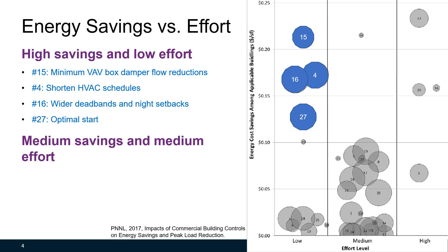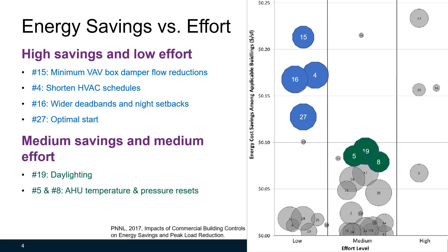The second group of measures are medium savings and medium effort. This includes daylight savings, though in this course we're not going to focus on lighting. Also in this group are air handling unit temperature and pressure resets and demand controlled ventilation, Number 17.